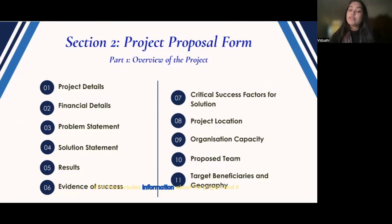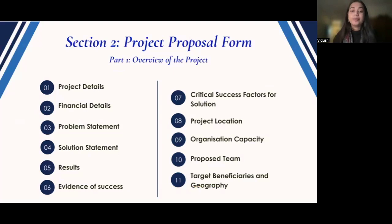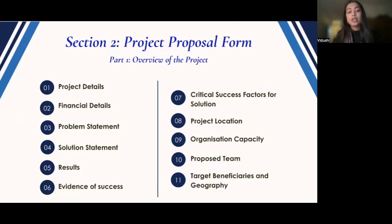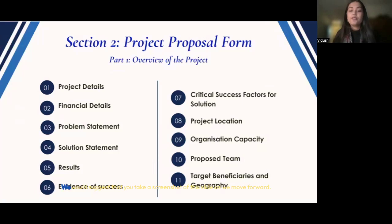Section two includes information about the project, structured in three parts. Part one is the overview of the project, which includes: project details, financial details, the problem statement, the solution statement, the intended results, evidence of success, critical success factors for the solution, the project location, organization capacity, the proposed team, and finally the target beneficiaries and geography. We would suggest you take a screenshot of the slide as we move forward.